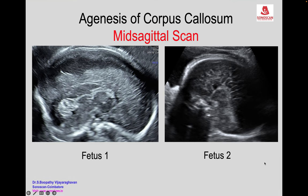Hello everyone, this is the next case scenario in Image to Diagnosis Fetal Medicine. These are two images of midsagittal section of two fetuses diagnosed to have agenesis of corpus callosum.